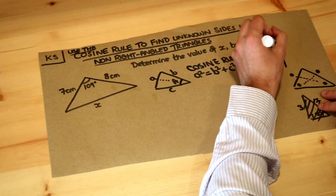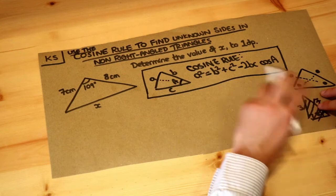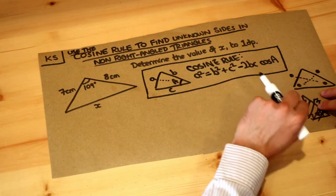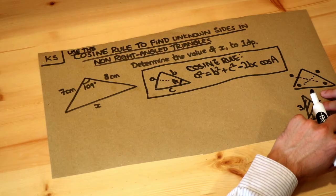Now I'm not going to prove it in this video because it would take me far too long, but it's basically a kind of extended version of Pythagoras' theorem that works on non-right-angle triangles.